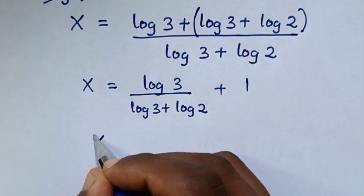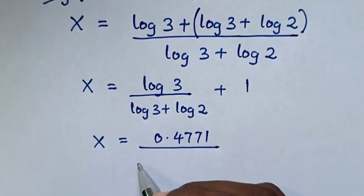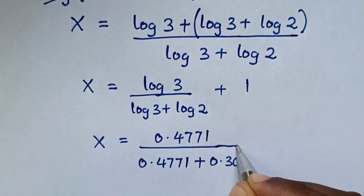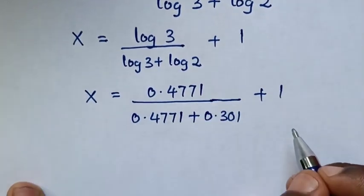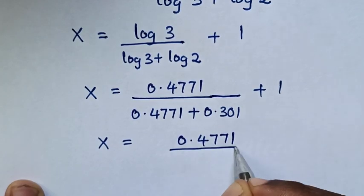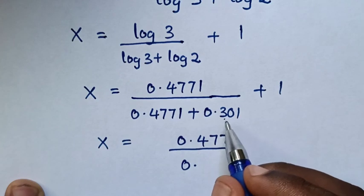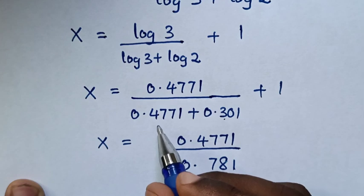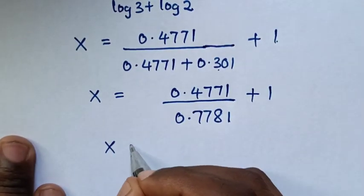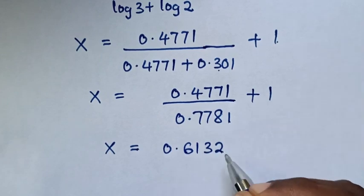Then it will be x is equal to log of 3, which is 0.4771, over log of 3 which is 0.4771 plus log of 2 which is 0.301, then plus 1. In the next step, it will be x is equal to 0.4771 over 0.7781, then plus 1, which gives 0.6132 plus 1.